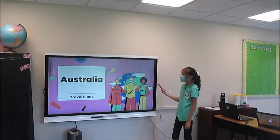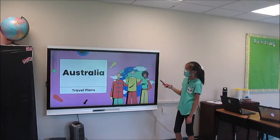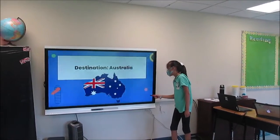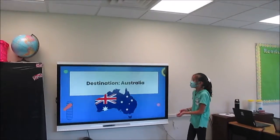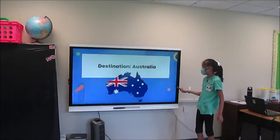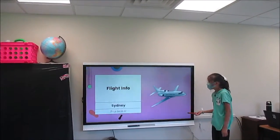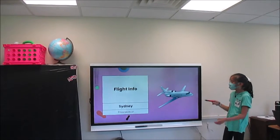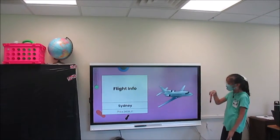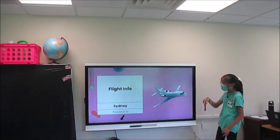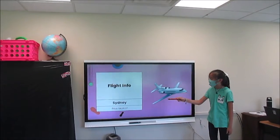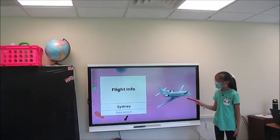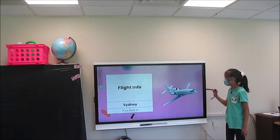My slide is about my travel plans for Australia. The destination is Australia. The flight info: the flight is to Sydney then back to America, and the price is $4,139.37.